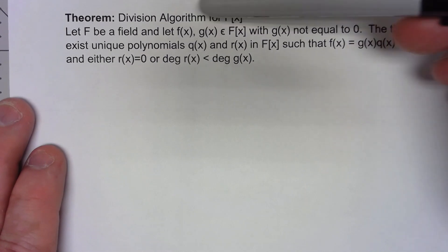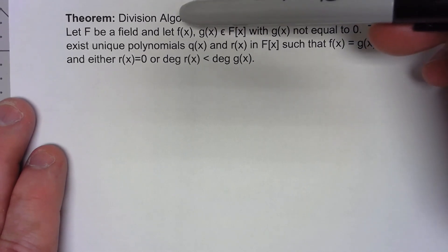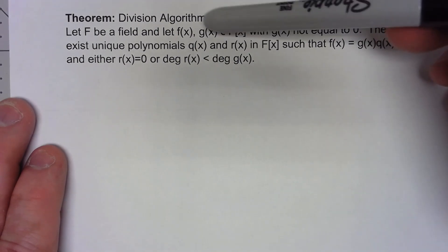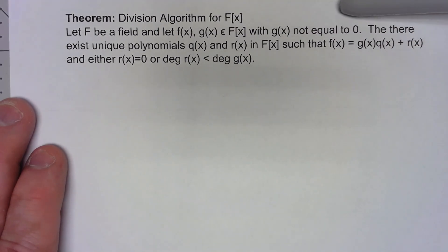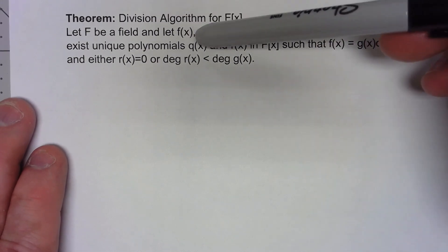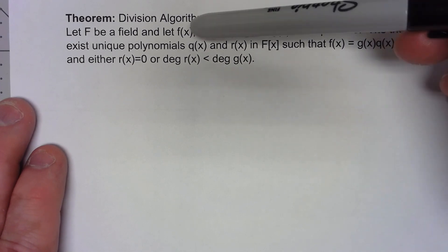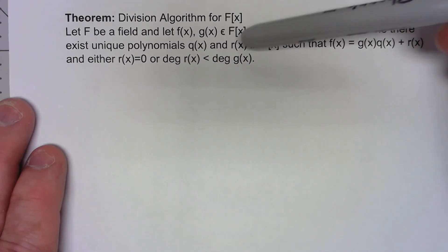We're going to take two polynomials inside that ring of polynomials, and specifically we're going to say that g of x is not equal to 0. Then we're going to say that there's unique polynomials q of x and r of x. Before I go through all the details, the whole idea is q is the quotient and r is the remainder.